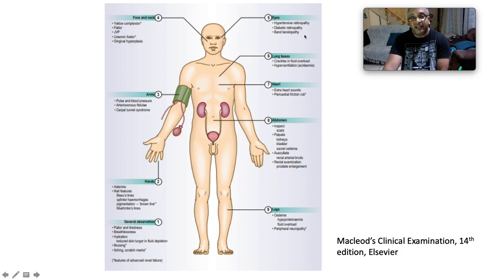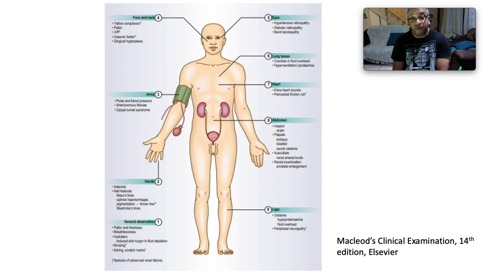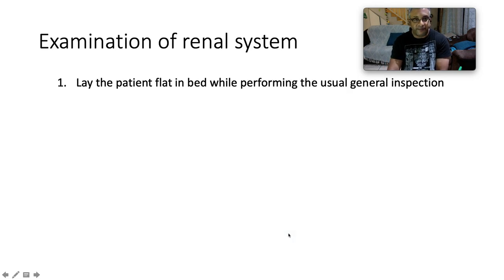Also be on the lookout for gingival hyperplasia. In the eyes, look for hypertensive and diabetic retinopathy as well as band keratopathy. Auscultate the posterior lung bases for crackles and note any hyperventilation or Kussmaul's respiration. At the heart, listen for extra heart sounds speaking to fluid volume overload or a pericardial friction rub from uraemia. In the legs, check for edema suggesting hypoproteinaemia and fluid overload, and examine for peripheral neuropathy.